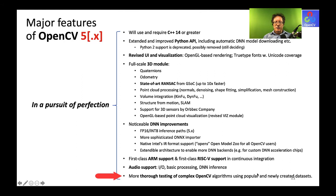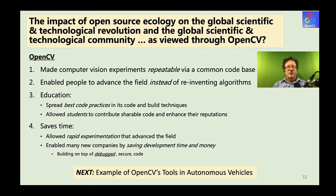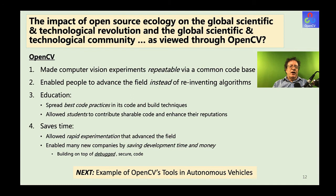What's the impact of open source on the global scientific and technical community as seen through OpenCV? For one, OpenCV made early conference papers repeatable — before, it was hard to recreate experiments built on locally brewed code. A common infrastructure made science more reproducible. It enabled people to advance the field instead of reinventing common algorithms, spread best coding practices in education, allowed students to show their work to employers, and allows rapid experimentation that itself advances the field.